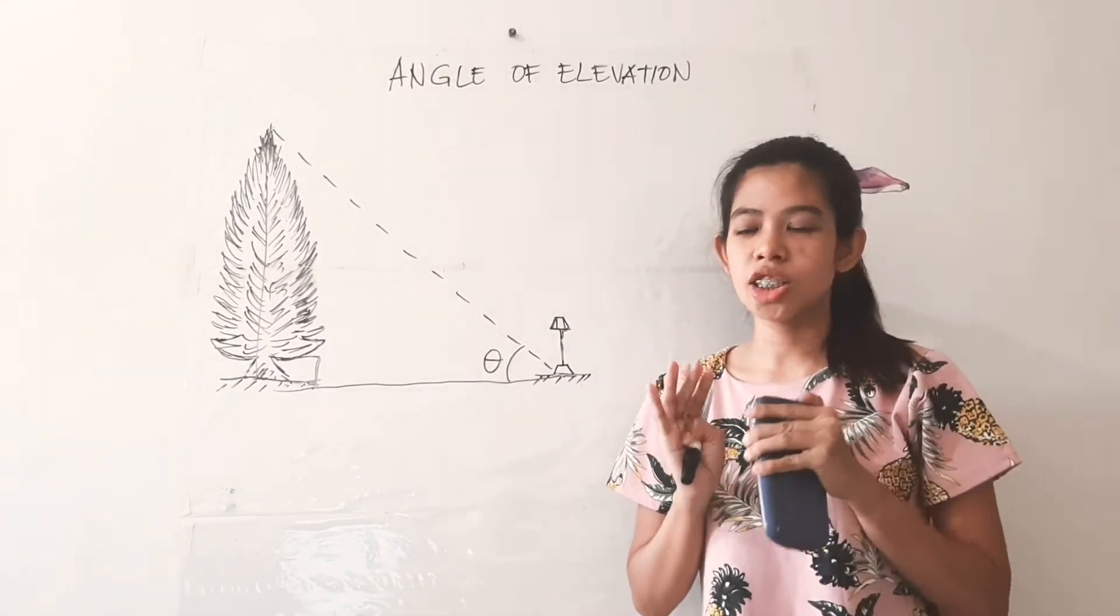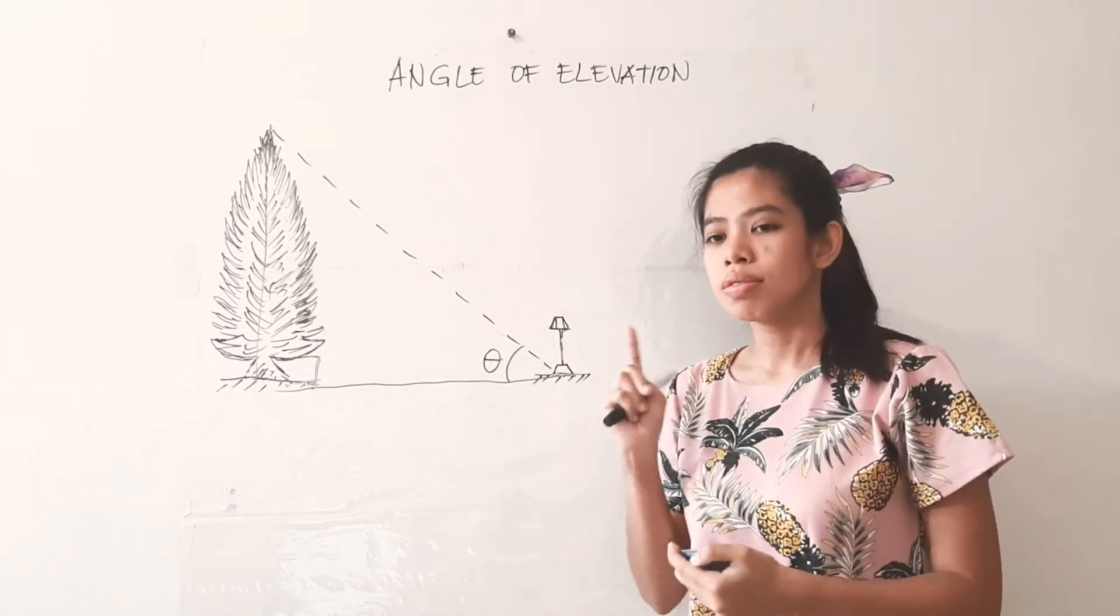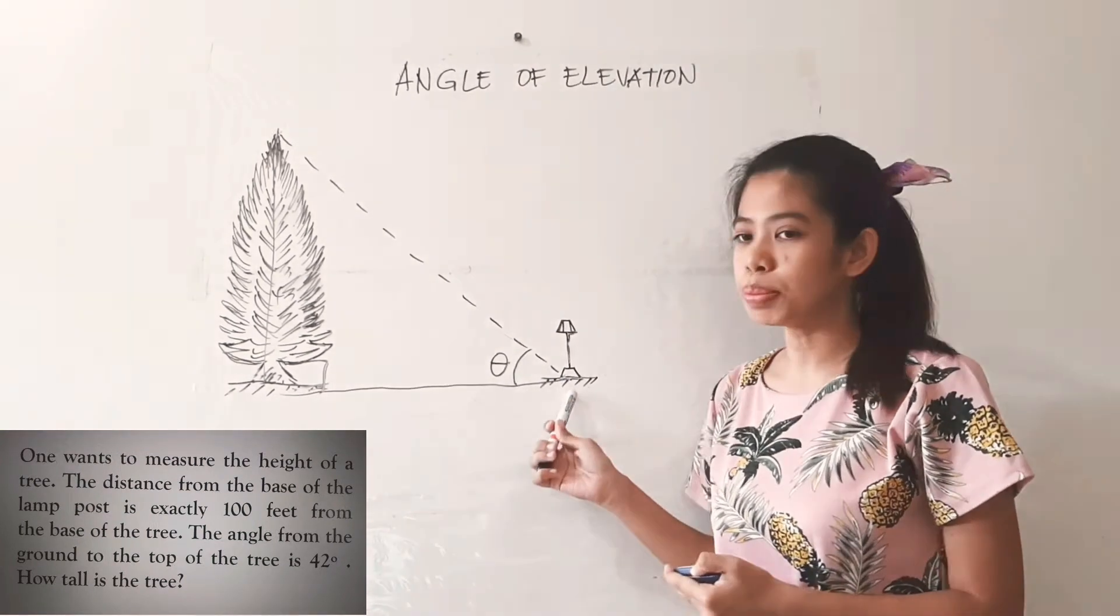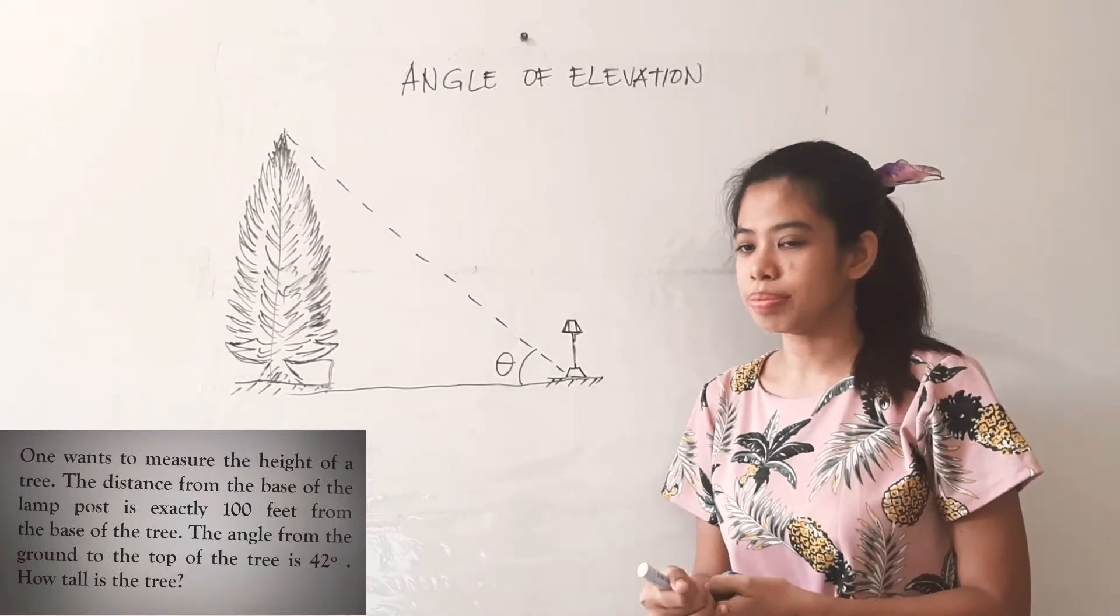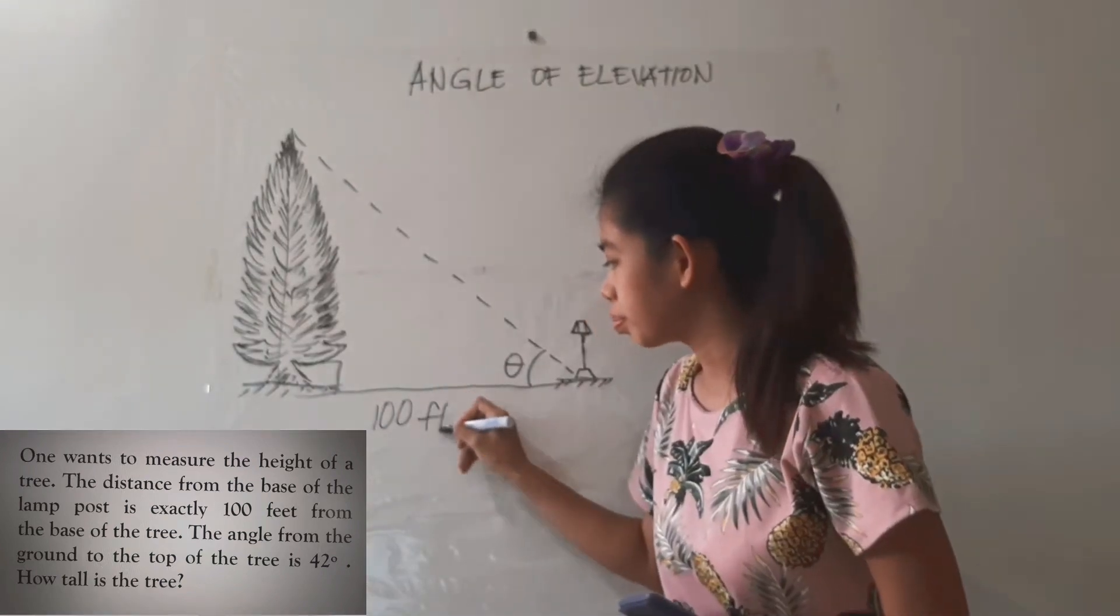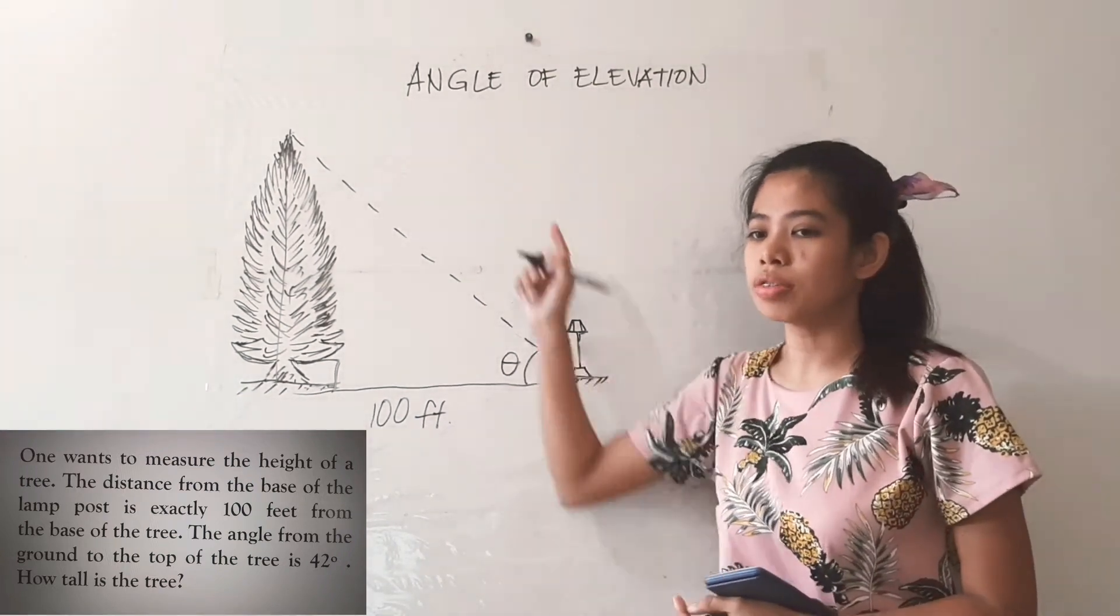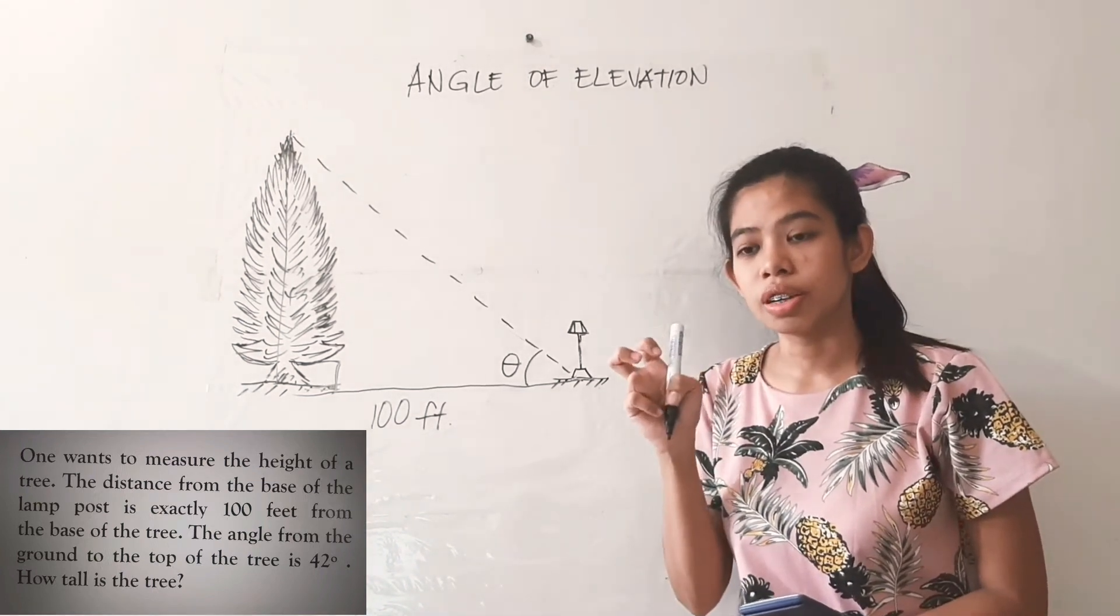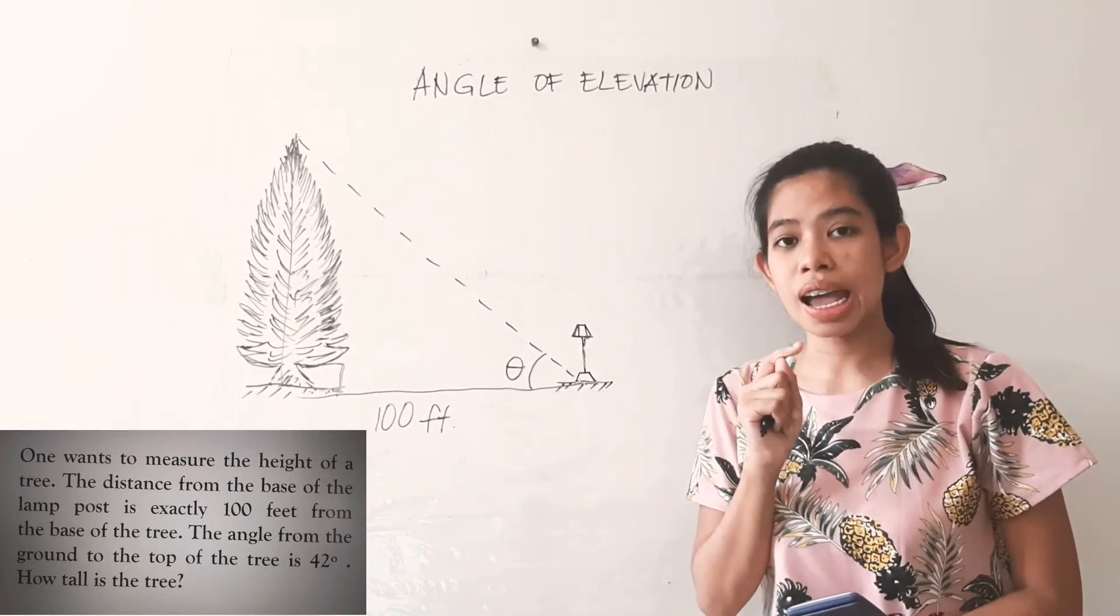So now let us apply our knowledge of angle of elevation to a problem. So suppose one wants to measure the height of a tree. The distance from the base of the lamppost to the tree is exactly 100 feet. Let us write it, 100 feet. Now the angle from the ground to the top of the tree is 42 degrees. Now listen to the keyword: the angle from the ground to the top, so that means it is referring to that angle of elevation.